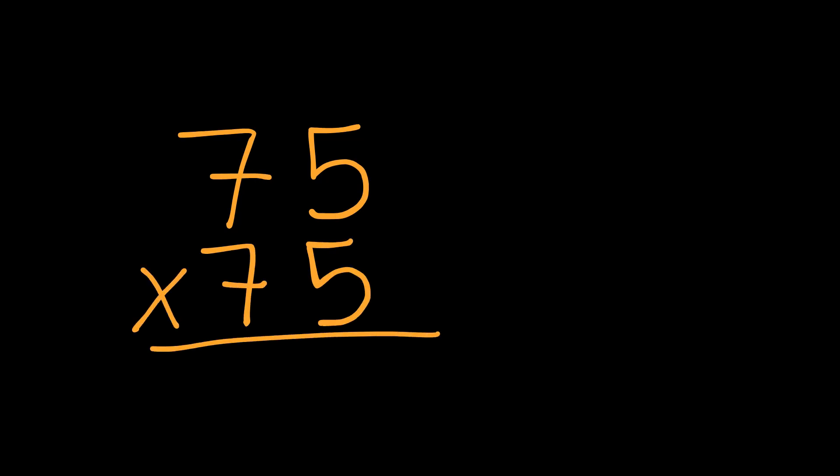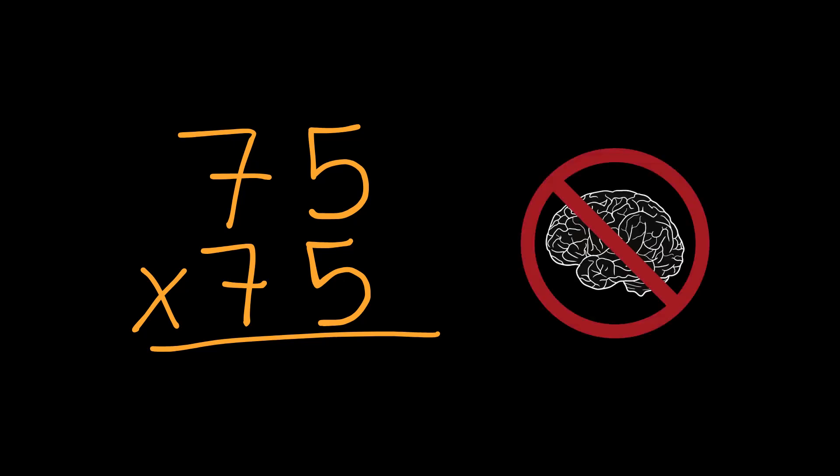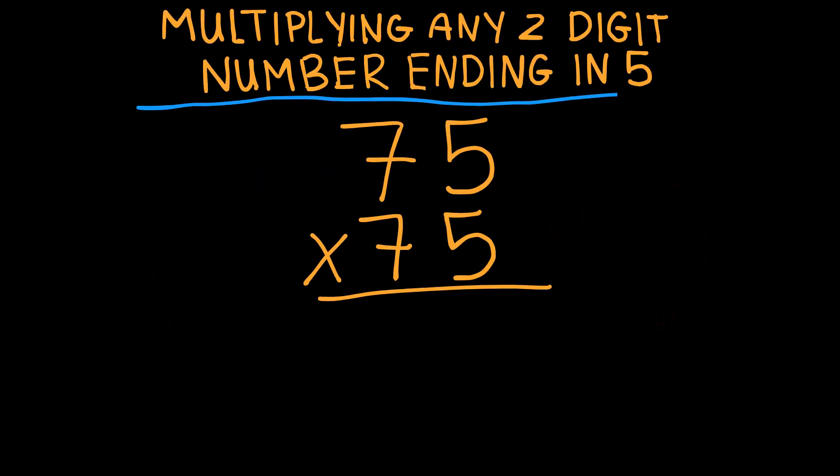Before we continue, can you solve 75 times 75 in 5 seconds? 5, 4, 3, 2, 1, 0. I bet you couldn't, I bet your brain just froze. So this other trick is about multiplying any two-digit number ending in 5. Here's the trick: take the first digit, which is 7, and we will multiply it by 8, one number higher. So we have 7 times 8, 7 times 8 is 56. Now just add 25 at the end, and that's our final answer: 5625.